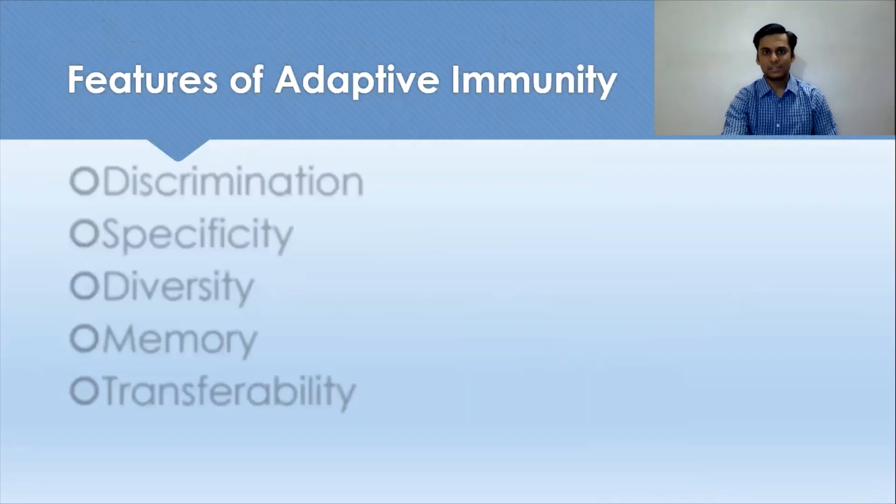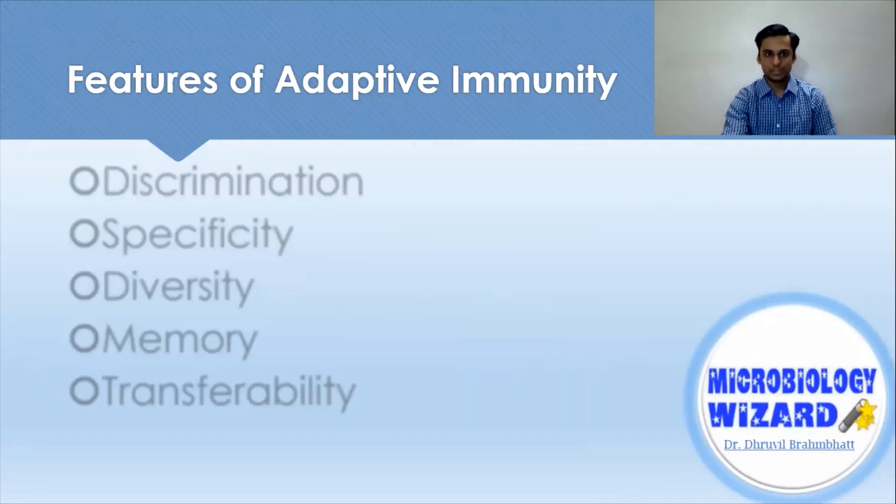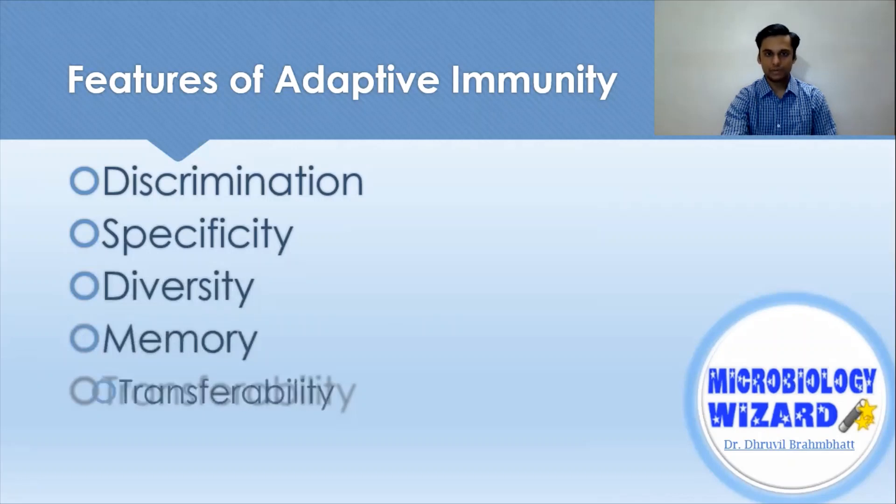Let's begin with the characteristics of adaptive immunity. There are five major features of adaptive immune response or, in general, immune response. First, discrimination. Second, specificity. Third, diversity. Fourth, memory. And fifth, transferability. Let's understand all of them in brief.